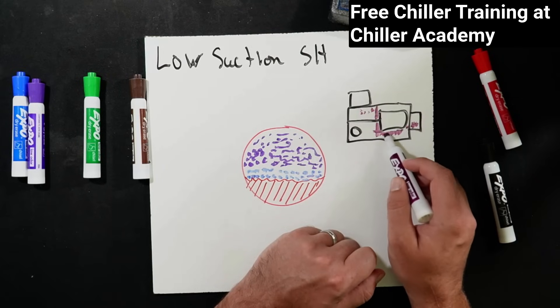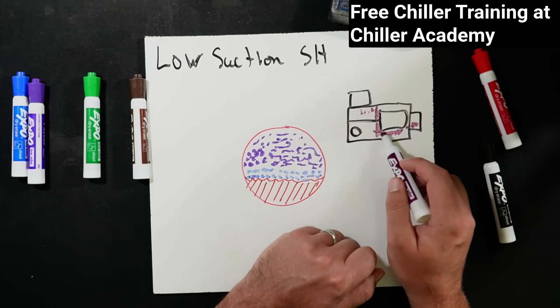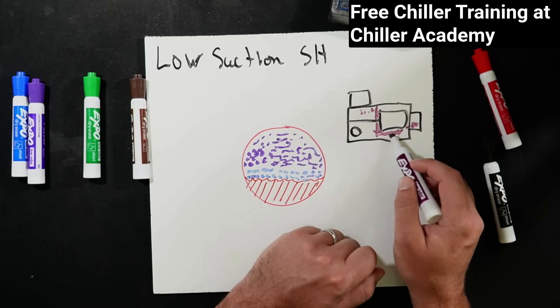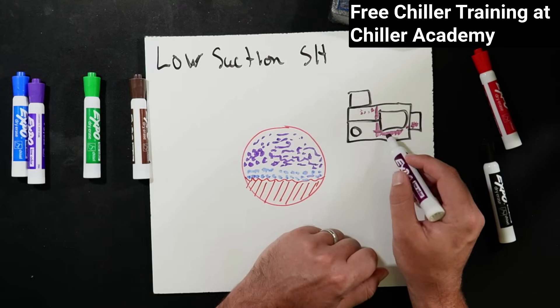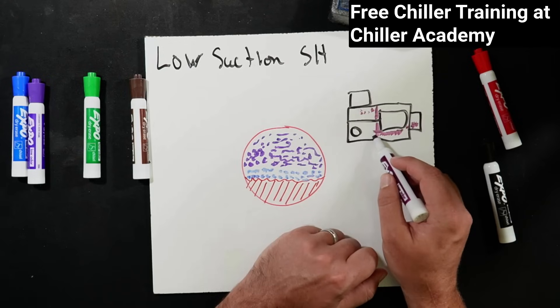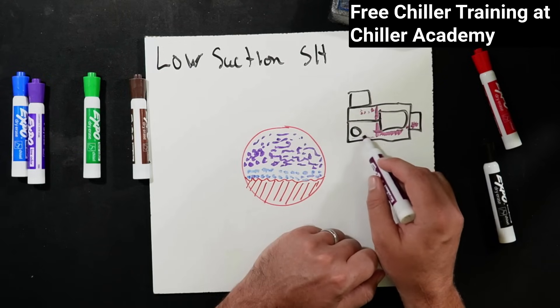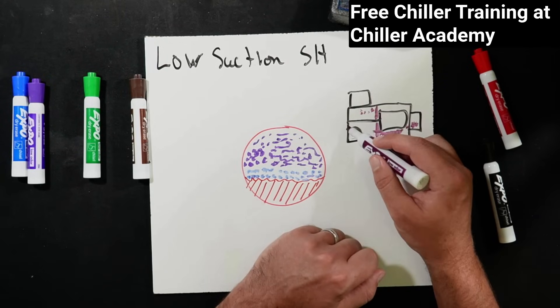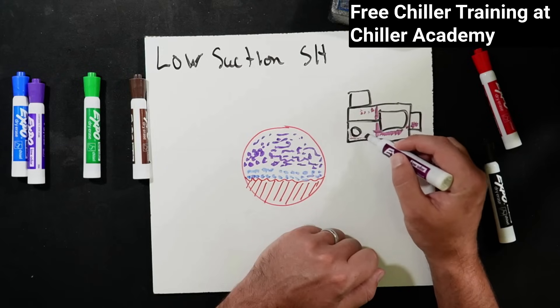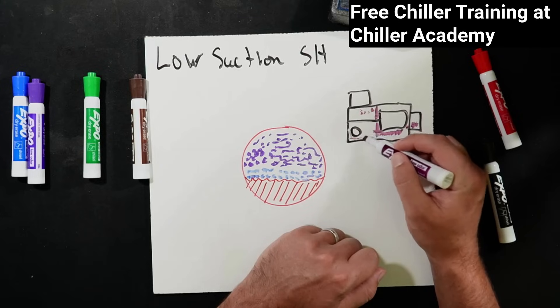Well, when liquid refrigerant starts to come in there, it now starts taking the path of that oil and liquid refrigerant is heavier than oil. It has a heavier specific gravity. And so it will start to collect down here, but our oil pump is also down here. So there's a lot of turbulence.